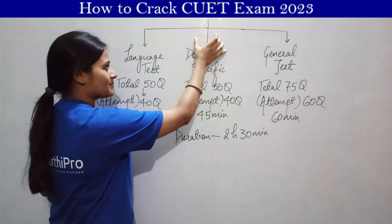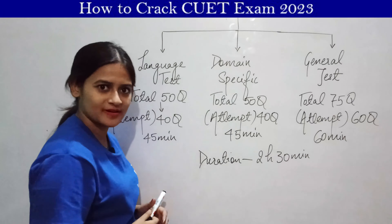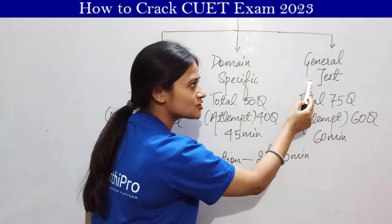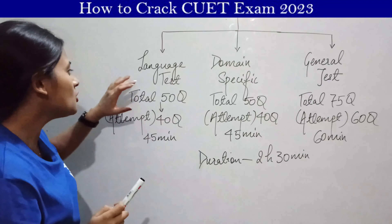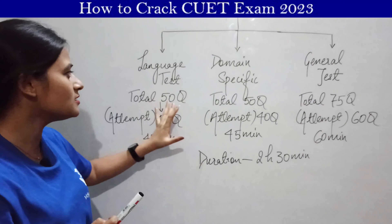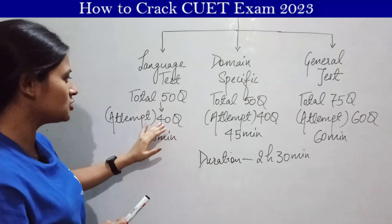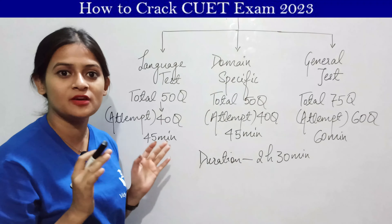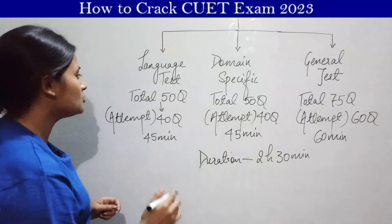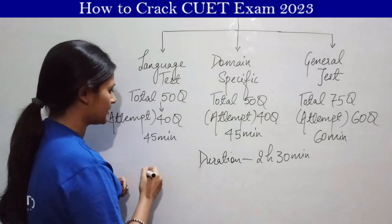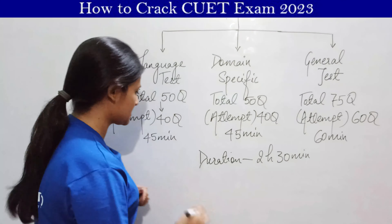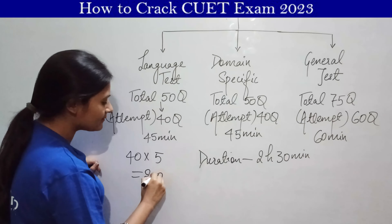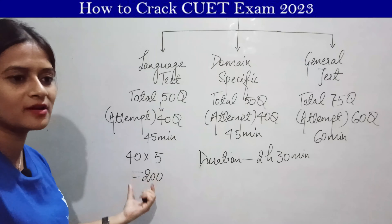Now let me give you an overview of CUET. The CUET exam is divided into three sections. The first is the language test — there will be 50 questions, out of which you need to attempt 40, with a total time of 45 minutes. Based on 2022 data, each question was 5 marks, so 40 into 5 means your language test is a total of 200 marks.